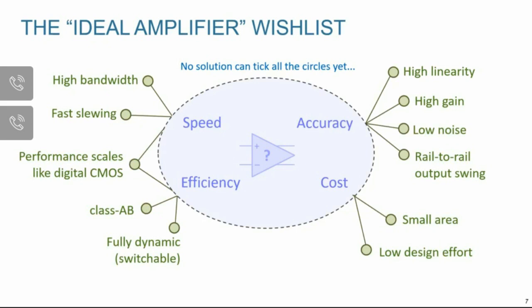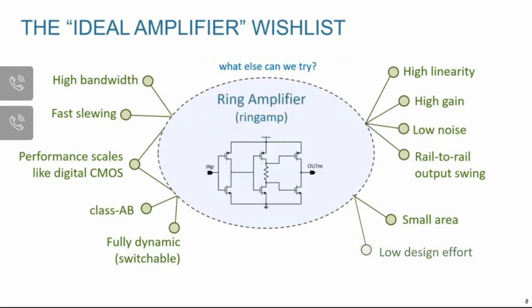For example, a GMC or dynamic open-loop amplifier does quite well in terms of speed and efficiency, but it's rather limited in terms of output swing, gain, and linearity. This brings us to the main topic of our talk today: the idea of a ring amplifier, or ring amp. It's yet another idea that attempts to tick off all of the items on the wishlist, but the fascinating thing is it actually succeeds at doing so. It's perhaps the closest we've come yet to a truly general-purpose scalable amplifier, and that's what makes it an exciting topic to discuss.